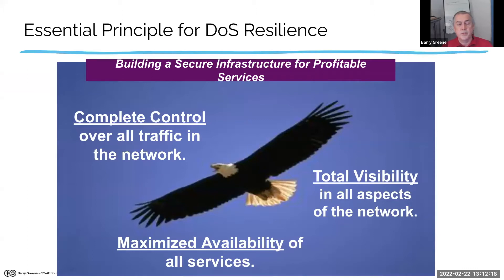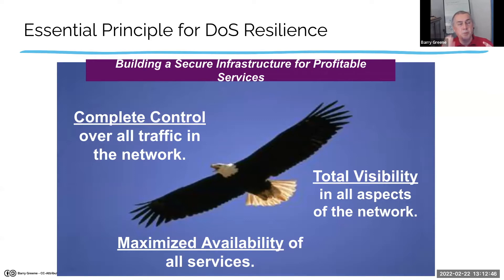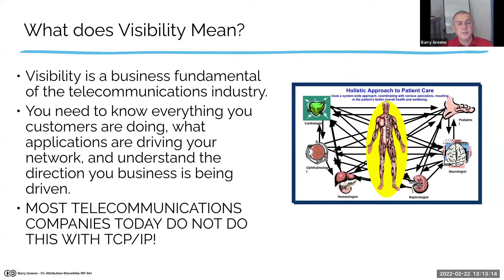There are some essential principles. Number one: set up your network so you have complete control. If you hand off control to somebody else who has to adjust the knobs, you're not giving yourself resiliency options. Number two: maximize your availability — really think about availability scenarios. Number three: visibility — you've got to have the telemetry to know what's going on. In today's DevOps world, your API visibility, flow telemetry like IP-Fix and NetFlow — those tools let you see what's happening.